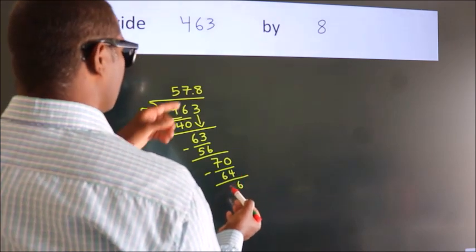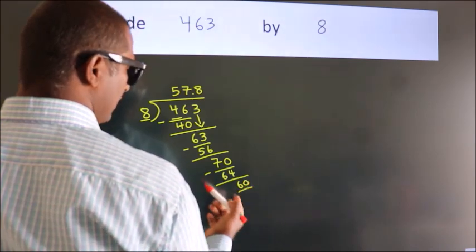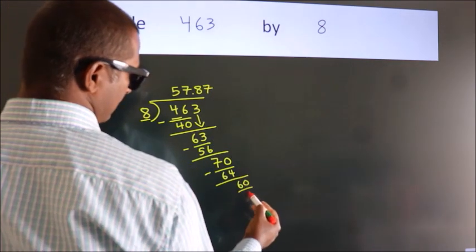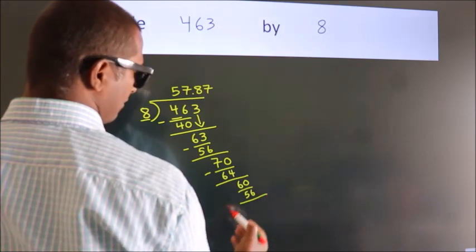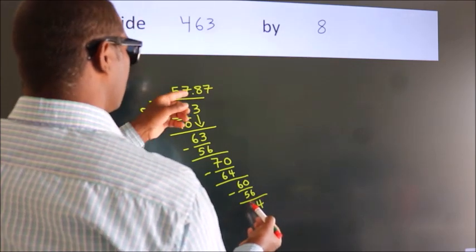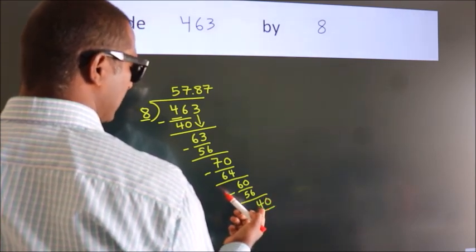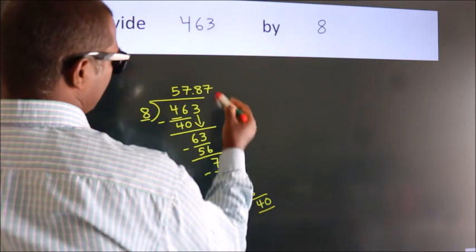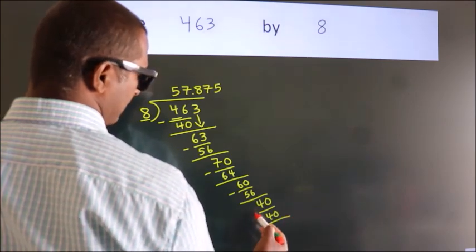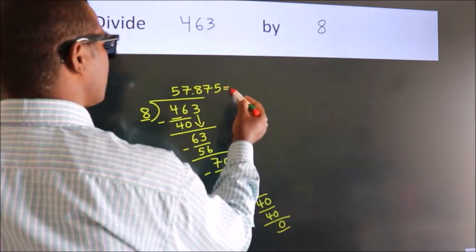After this, we already have the decimal, so directly take 0. So 60. A number close to 60 in 8 table is 8 fives 40. Now we subtract. We get 0. Here we got remainder 0. So this is our quotient.